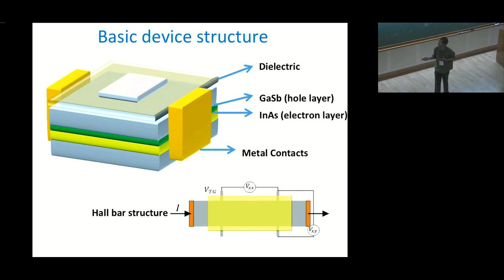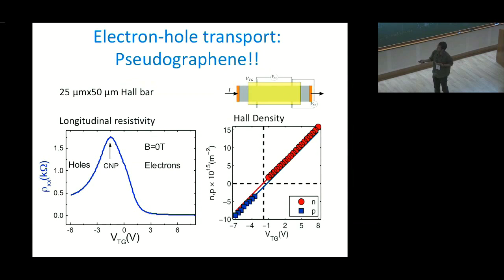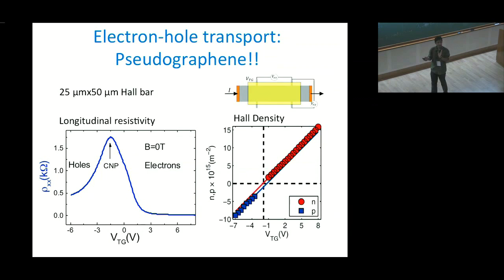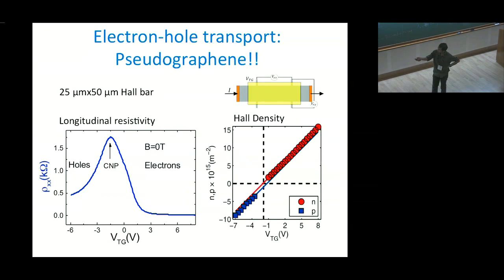In the Hall bar device, we measure the longitudinal resistance and Hall resistance. We pass current along one direction. Here is plotted the longitudinal resistance as a function of top gate voltage. Gate voltage corresponds to carrier density — positive gate voltage induces electrons, negative gate voltage induces holes. On the positive side, it's mainly electrons and the resistance is low, meaning it's highly conductive.